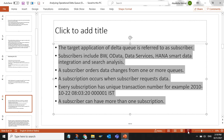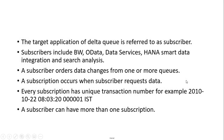The target application of a delta queue is referred to as a subscriber. Subscribers include BW, OData, Data Services, HANA smart data integration, and search analysis. A subscriber orders data changes from one or more queues. A subscription occurs when a subscriber requests data. Every subscription has a unique transaction number, for example, October 22, 2010, 803 and 22000001IST. A subscriber can have more than one subscription.